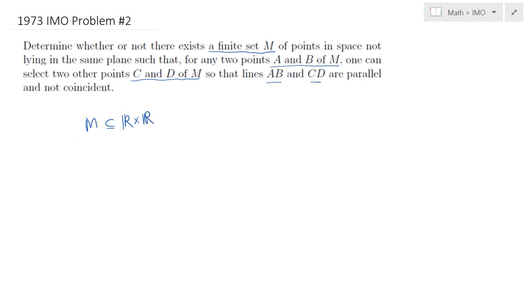What we need to show is that if two points A and B are two points of M, then we can find two other points C and D of M such that AB and CD would be parallel, and obviously AB and CD not necessarily collinear. That would be the equivalent form of this problem.